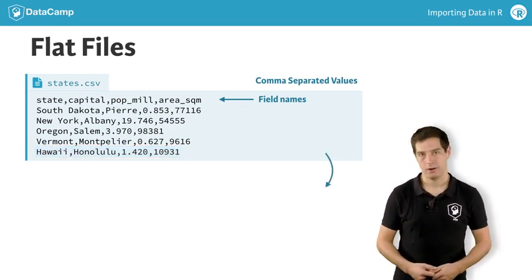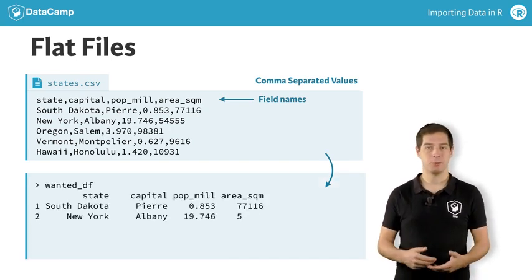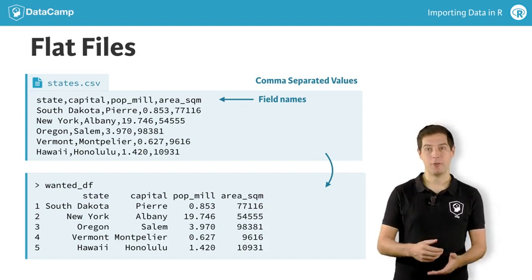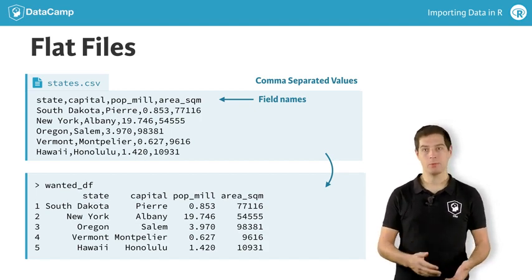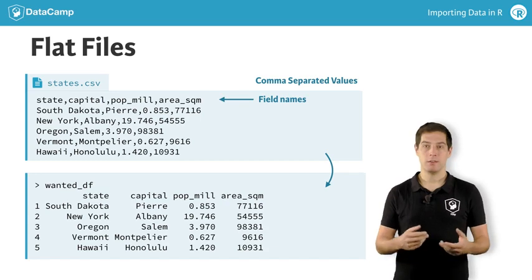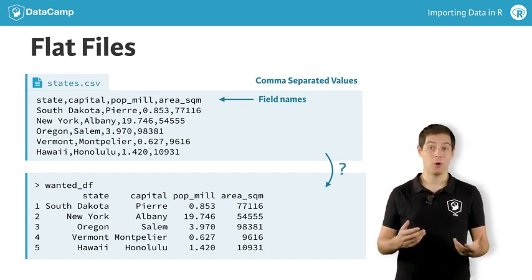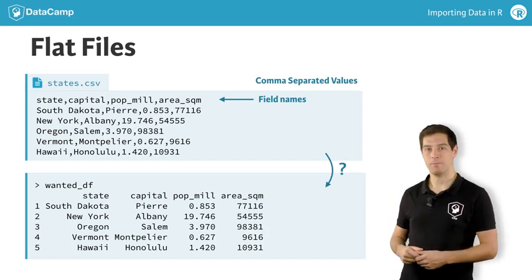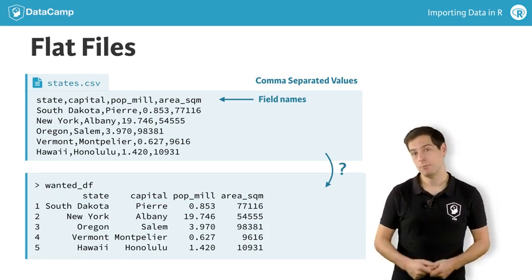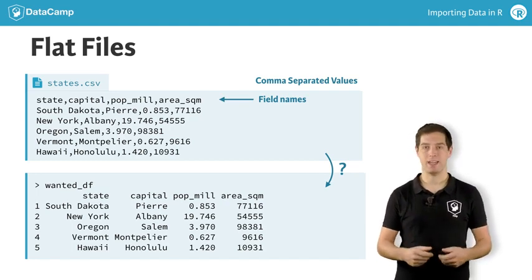What would this data look like in R? Well, actually, the structure nicely corresponds to a dataframe that ideally looks like this. The rows in the dataframe correspond to the records, and the columns correspond to the fields. The field names are used to name the columns of the dataframe. But how to go from this CSV to this dataframe? We're in luck, because the standard distribution of R provides functionality to import these flat files into R as a dataframe.